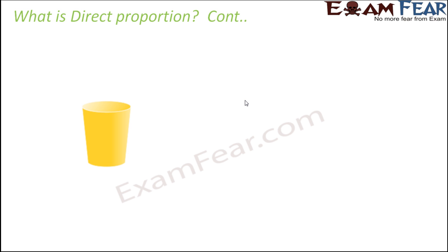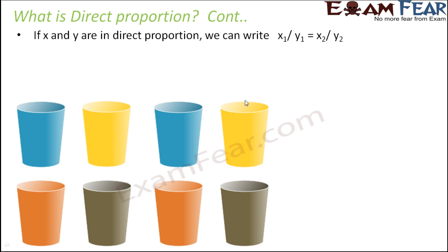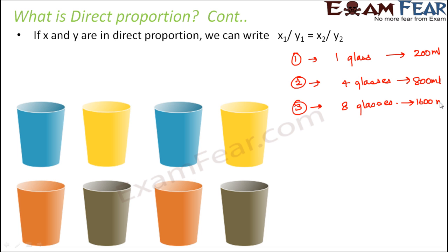Now on similar lines, we can also say that if at any instant of time, these ratios are same, that means, these are the three different instances. And we found that if x and y are in direct proportion, then x1 by y1 is equal to x2 by y2. What do we mean by this? So we considered three cases. In case one, we had one glass. In case two, we had four glasses. And in case three, we had eight glasses. So these were the three scenarios that we assumed. In the first case, the capacity for one glass was 200 ml. In the second case, it was 800 ml. And in the third case, it was 1600 ml.